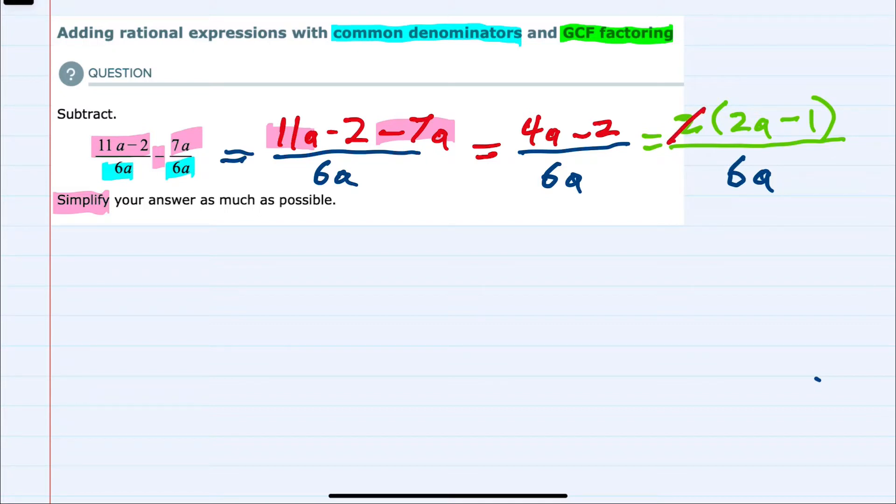2 goes into 2 once and 2 goes into 6 three times. So rewriting this fraction, in the top I've cancelled that 2 that I factored out. The 1 times 2a minus 1 is just going to be 2a minus 1, and the denominator I've cancelled the 6 to make it a 3, and the a is still there. So 3a is my denominator. I've simplified this now as much as possible.